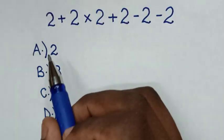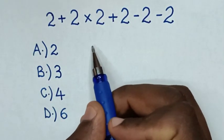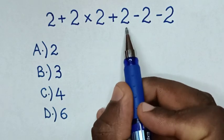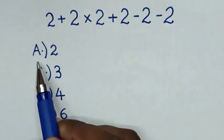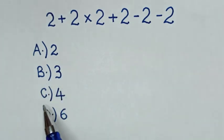Hello. How to solve 2 plus 2 times 2 plus 2 minus 2 minus 2. Select between the answers: A, 2, B, 3, C, 4, D, 6.